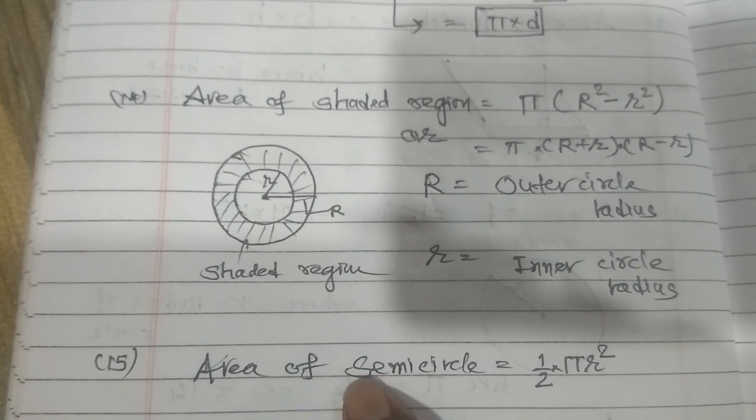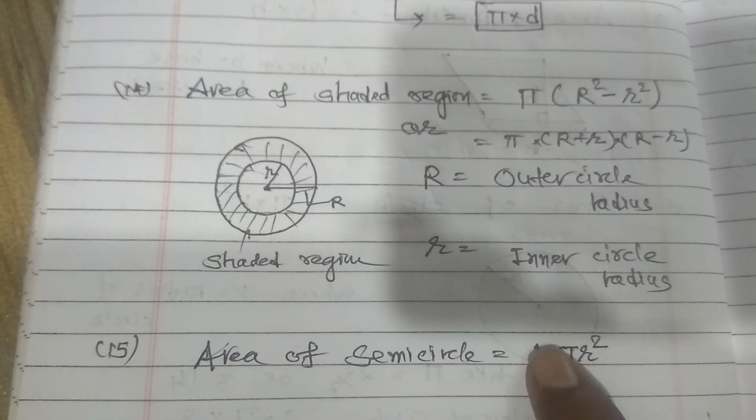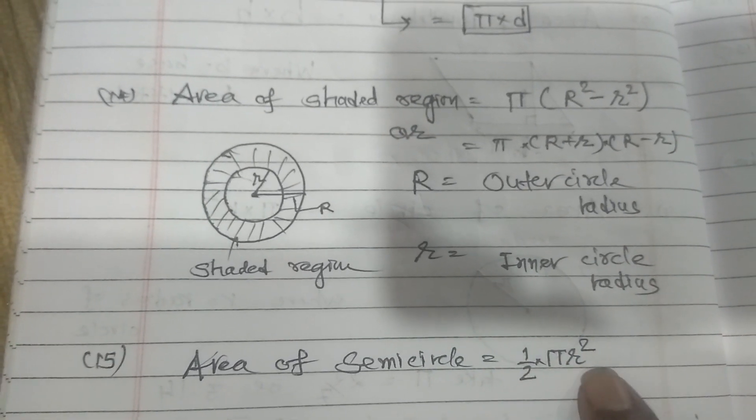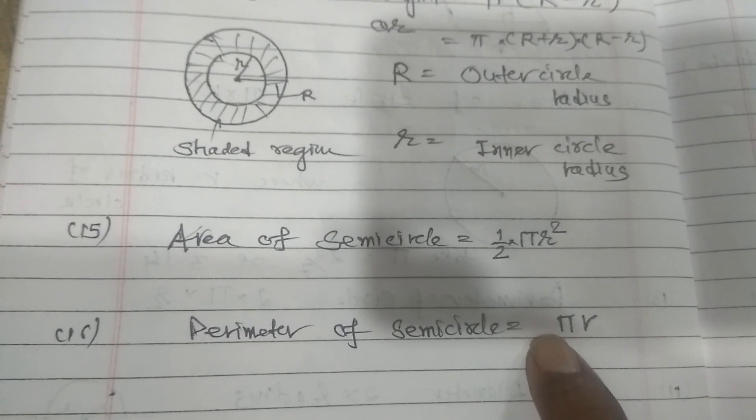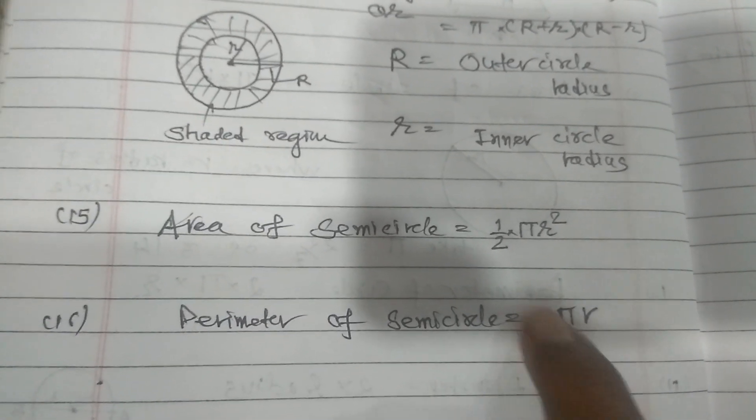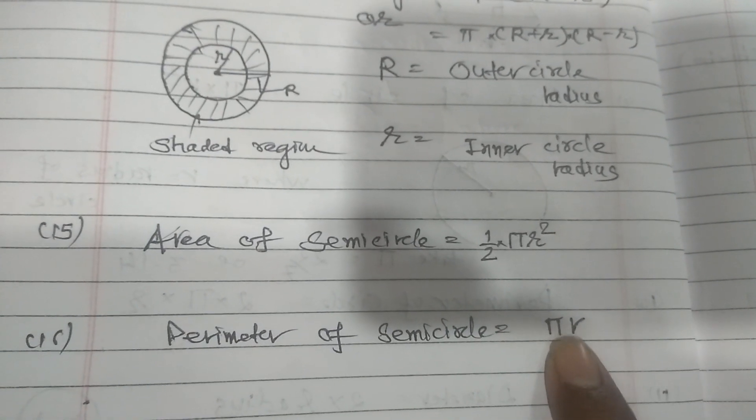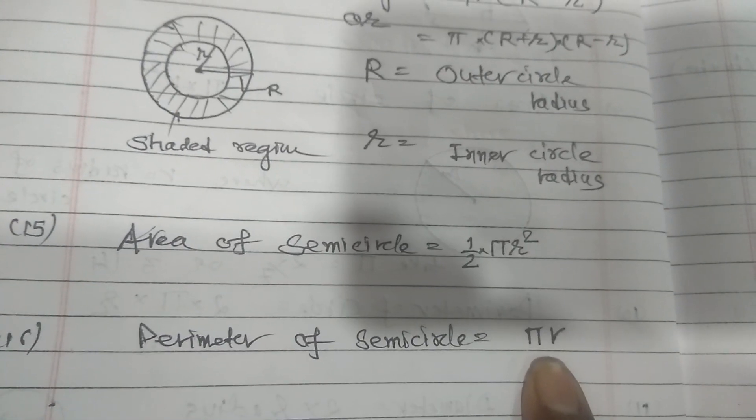Area of semicircle. Circle is pi r square. Semi means half. So half of pi r square. Perimeter of semicircle, that is 2 pi r upon 2, 2 and 2 cancel. At that time, perimeter of semicircle is equal to pi into r.